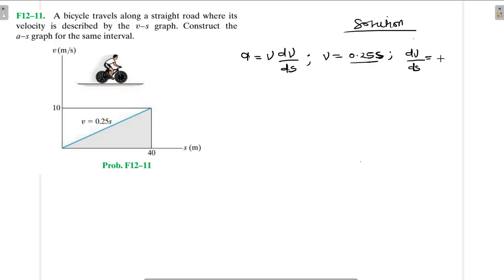Therefore our acceleration is going to be equal to v, which is the velocity, so it is 0.25s, times dv/ds which we found is 0.25.